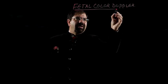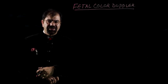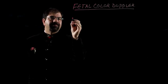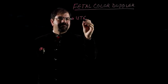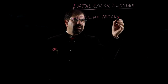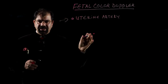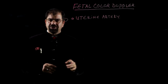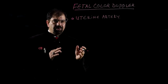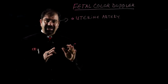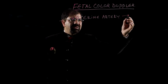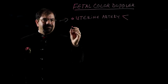Now let us discuss the fetal color Doppler course and its contents and subtopics. First, the uterine artery — we will discuss the normal uterine artery and the abnormal uterine artery. When you know what is normal, you can identify what is abnormal. We will cover both normal and abnormal uterine artery, and how to focus and locate the uterine artery on patients.